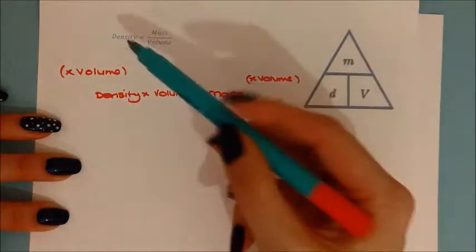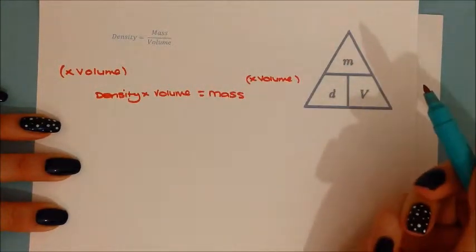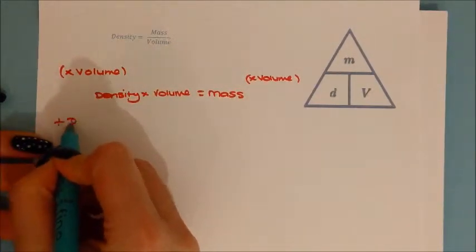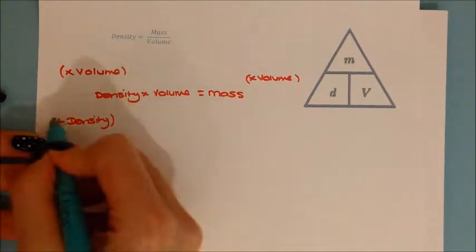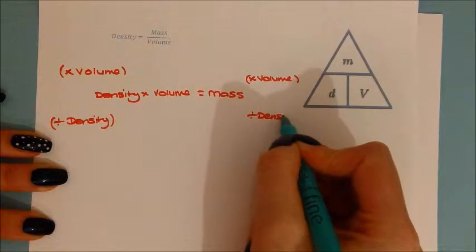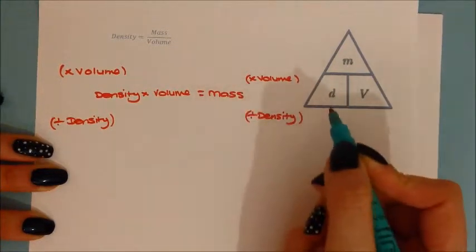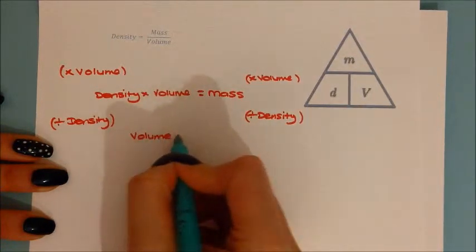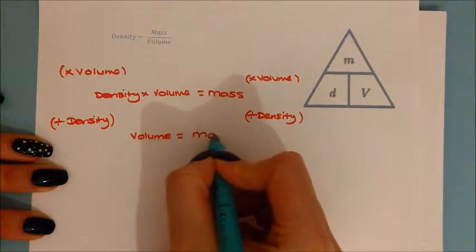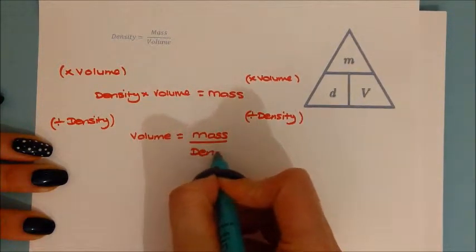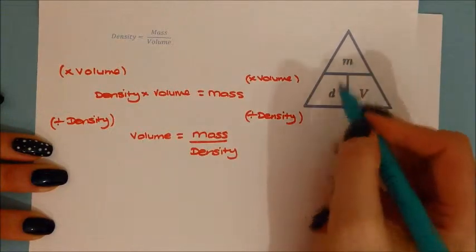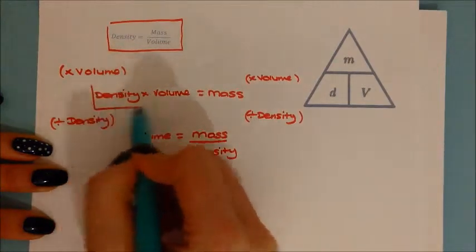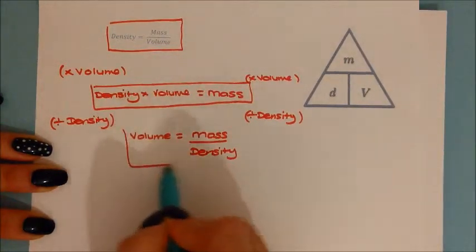Now you want to get volume on its own. Volume has been multiplied by density, so you divide both sides by density. Dividing by density cancels it out, leaving volume on one side, and mass divided by density on the other. So the three rearrangements are: density equals mass divided by volume; density times volume equals mass; and volume equals mass divided by density.